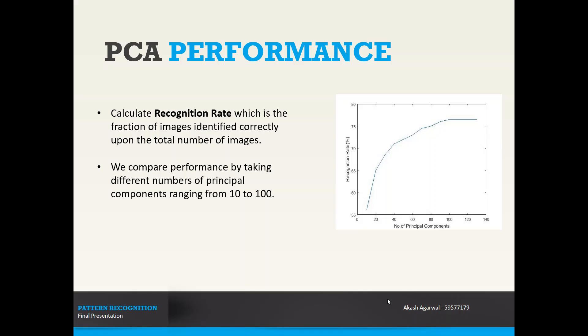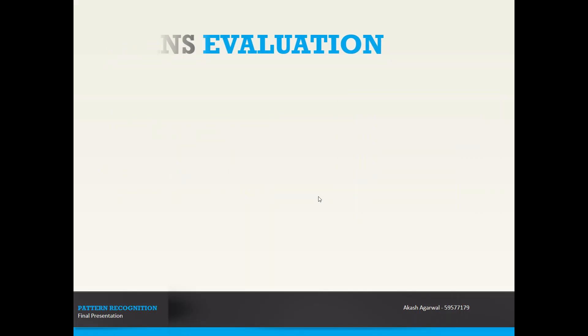I measured the PCA performance by calculating recognition rate, which is the fraction of images identified correctly upon the total number of images. We compare this performance by taking different numbers of principal components, from 10 to 100, increasing by 10 every time. We see the recognition rate increases as we increase the number of principal components, but after a certain point around 100, it flattens out. There is no performance gain once we reach the maximum important number of components. This confirms our understanding that most of the variance is captured by a small number of components.